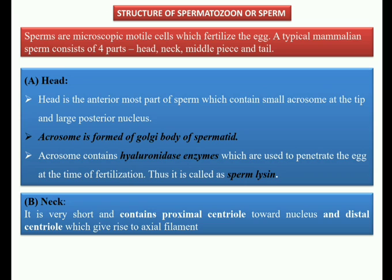Now we look at the structure of spermatozoa or sperm. Sperms are microscopic, motile cells whose main function is to fertilize the egg. A typical mammalian sperm consists of four parts: head, neck, middle piece, and tail.